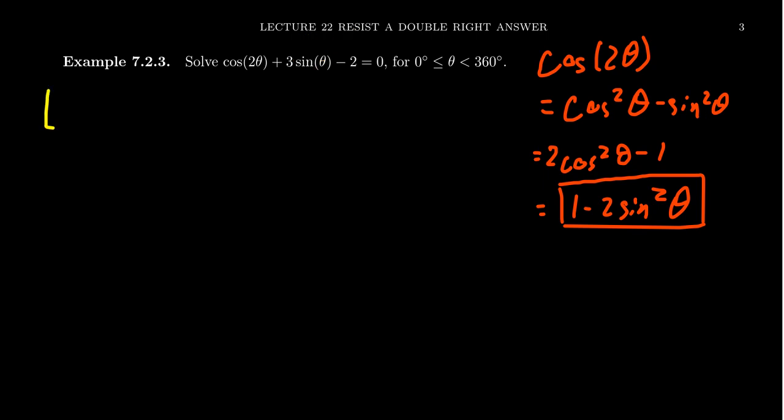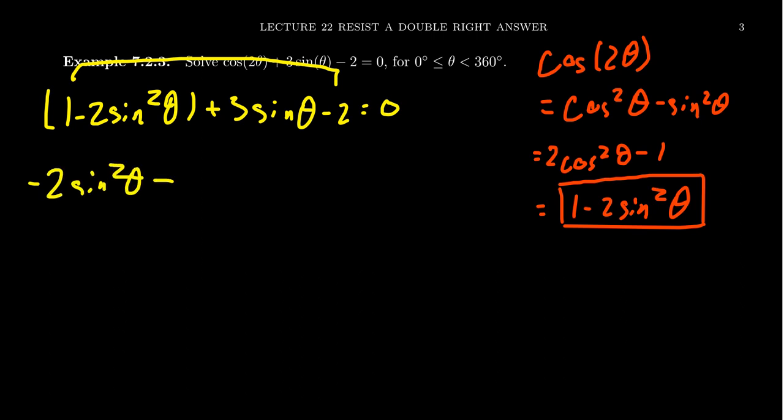Cosine of two theta becomes one minus two sine squared theta. We then get plus three sine theta minus two equals zero. Combine some like terms, which basically is just the one and the negative two. We get negative two sine squared theta plus three sine theta and a negative one equals zero.